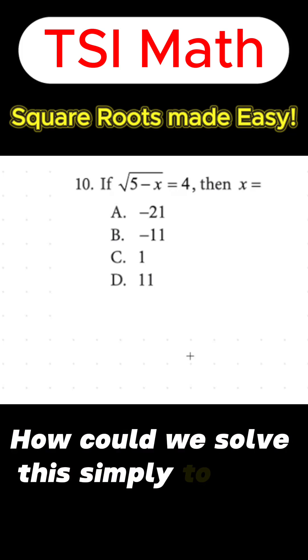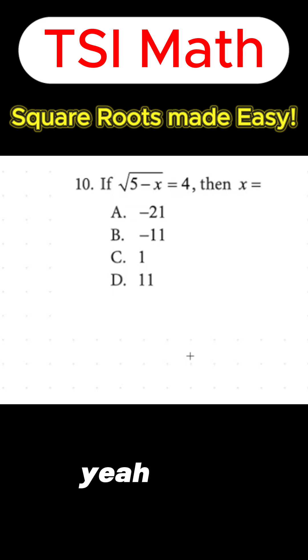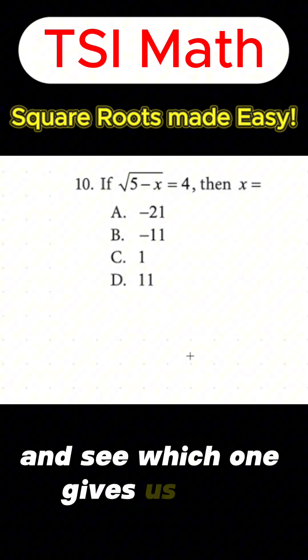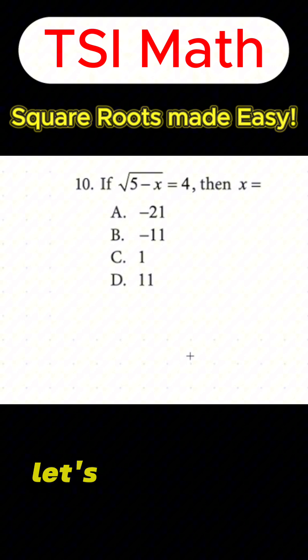How could we solve this simply? So plug in all the variants, like the A, B, and C. Yeah, just plug in all the answer choices and see which one gives us 4 on the left hand side of the equation. Does that make sense? Yes. Great, let's do it.